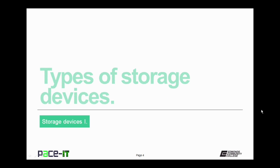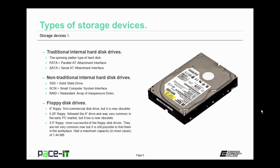We'll truly begin this session with a discussion on types of storage devices. First up is the traditional internal hard disk drive — the spinning platter type. It had two types of interfaces: the parallel AT attachment interface, the PATA interface, and the SATA interface, the serial AT attachment interface.